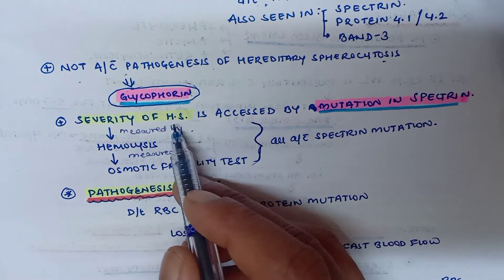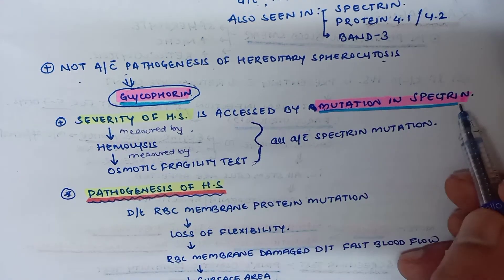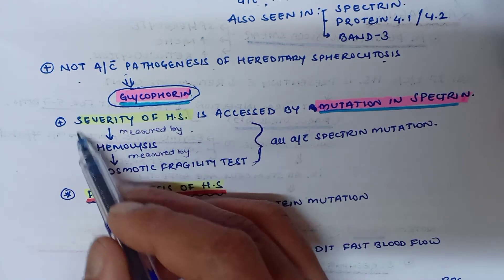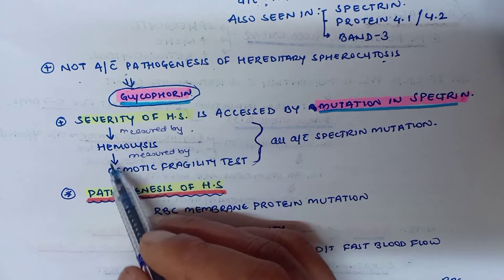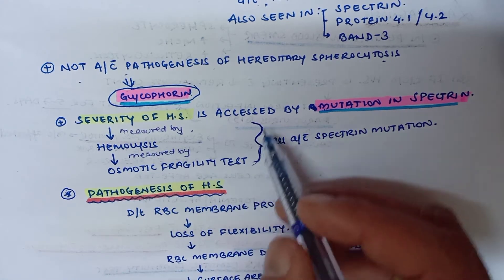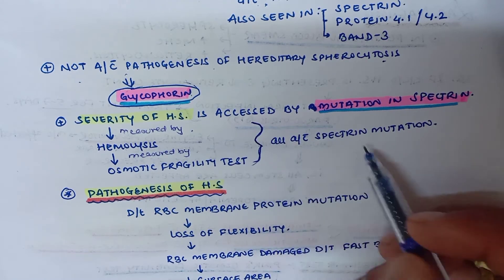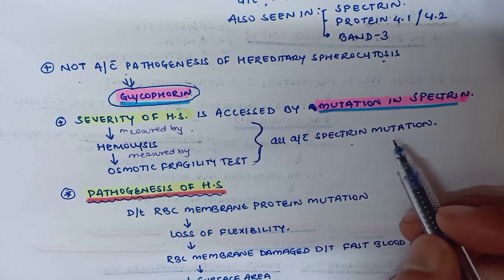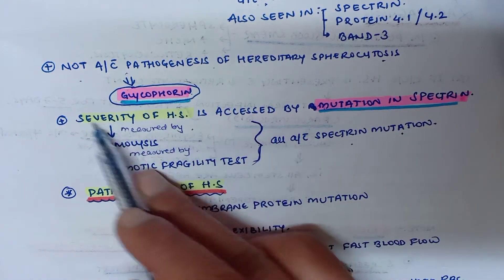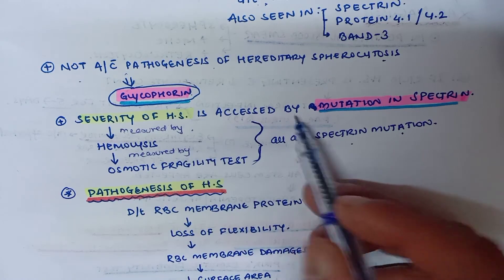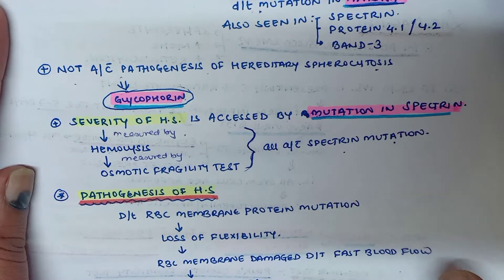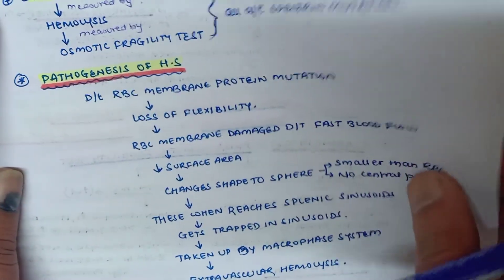The severity of hereditary spherocytosis is assessed by mutation in spectrin. This severity is measured by hemolysis, and hemolysis is measured by the osmotic fragility test. All of this is associated with spectrin mutation.